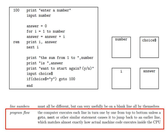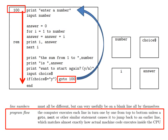Finally, there is program flow. The computer executes each line in turn, one by one, from top to bottom, unless a goto, or a next, or some similar statement causes it to jump back to an earlier line. This matches almost exactly how actual machine code executes inside the CPU. For example, this goto 100 causes the program to jump back to line 100, while this next i causes the program to jump back to the for i line. But other than these jumps, the execution is in strict order from top to bottom, essentially like a shopping list: do this, do this, do this, then end.